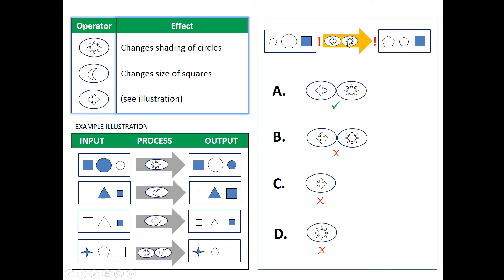Then the sun shape, we should look, what does it do? The sun shape changes the shading of circles, right? So this is what it should look like, okay? So this is your output.